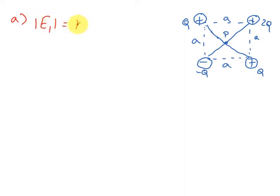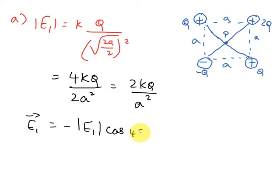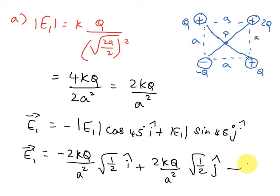E1 equals KQ divided by (root 2 · A / 2)² which simplifies to 4KQ / (2A²), equal to 2KQ / A². Therefore, the E1 vector due to the lower-right charge +Q is: E1 vector = −|E1| cos45° î + |E1| sin45° ĵ, which gives E1 vector = −(2KQ / A²)·(1/√2) î + (2KQ / A²)·(1/√2) ĵ. This is equation 1.